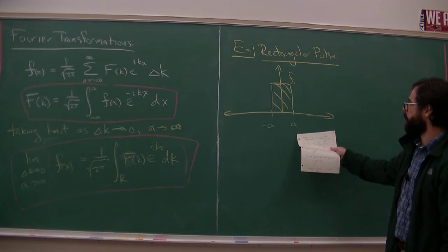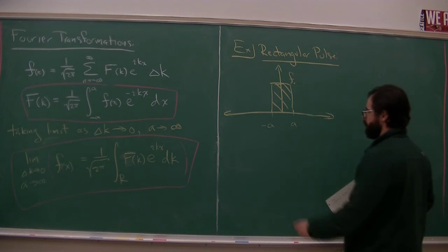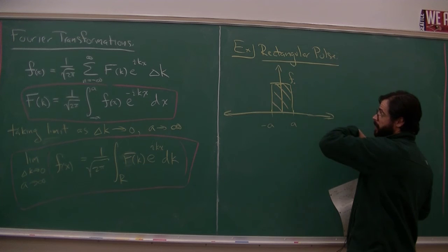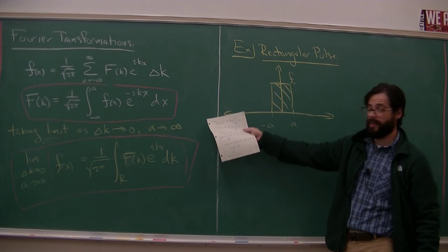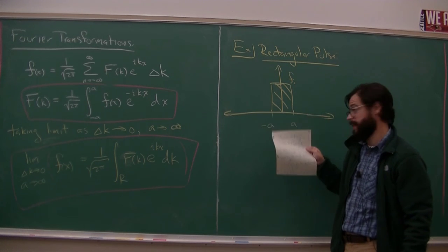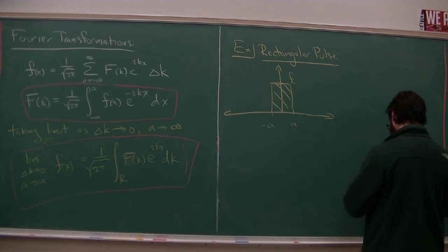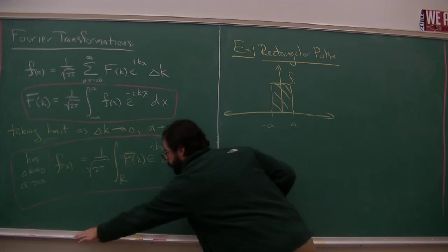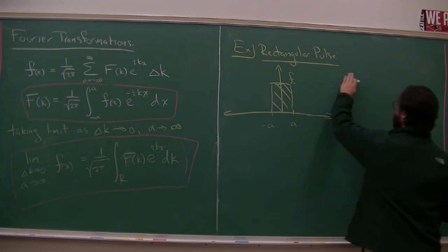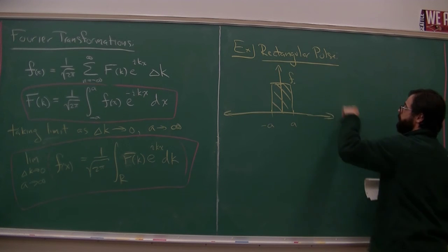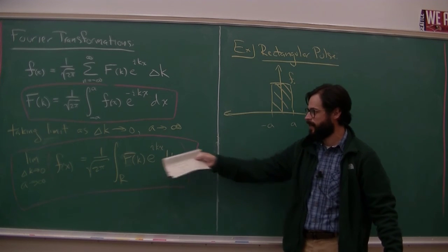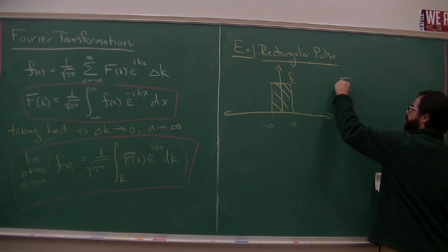Let's redo the example we did in class, but do a more slow and conscientious job. So let's go between minus a and a, and we've got a height of f-naught. So this is a function where there's nothing going on all the way out to negative infinity and positive infinity. This isn't a rectangular wave. This is a pulse. Nothing happens for all of time. We get a pulse, and then nothing happens for the rest of time.